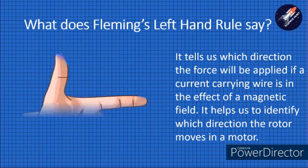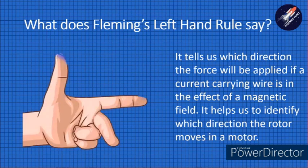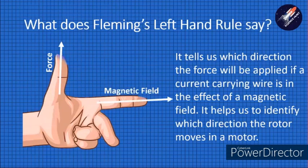It includes our thumb, index finger and the middle finger. The thumb represents the direction of a force. Index finger, the direction of magnetic field that is north pole to south pole. And the middle finger represents the conventional flow of current that is positive to negative.